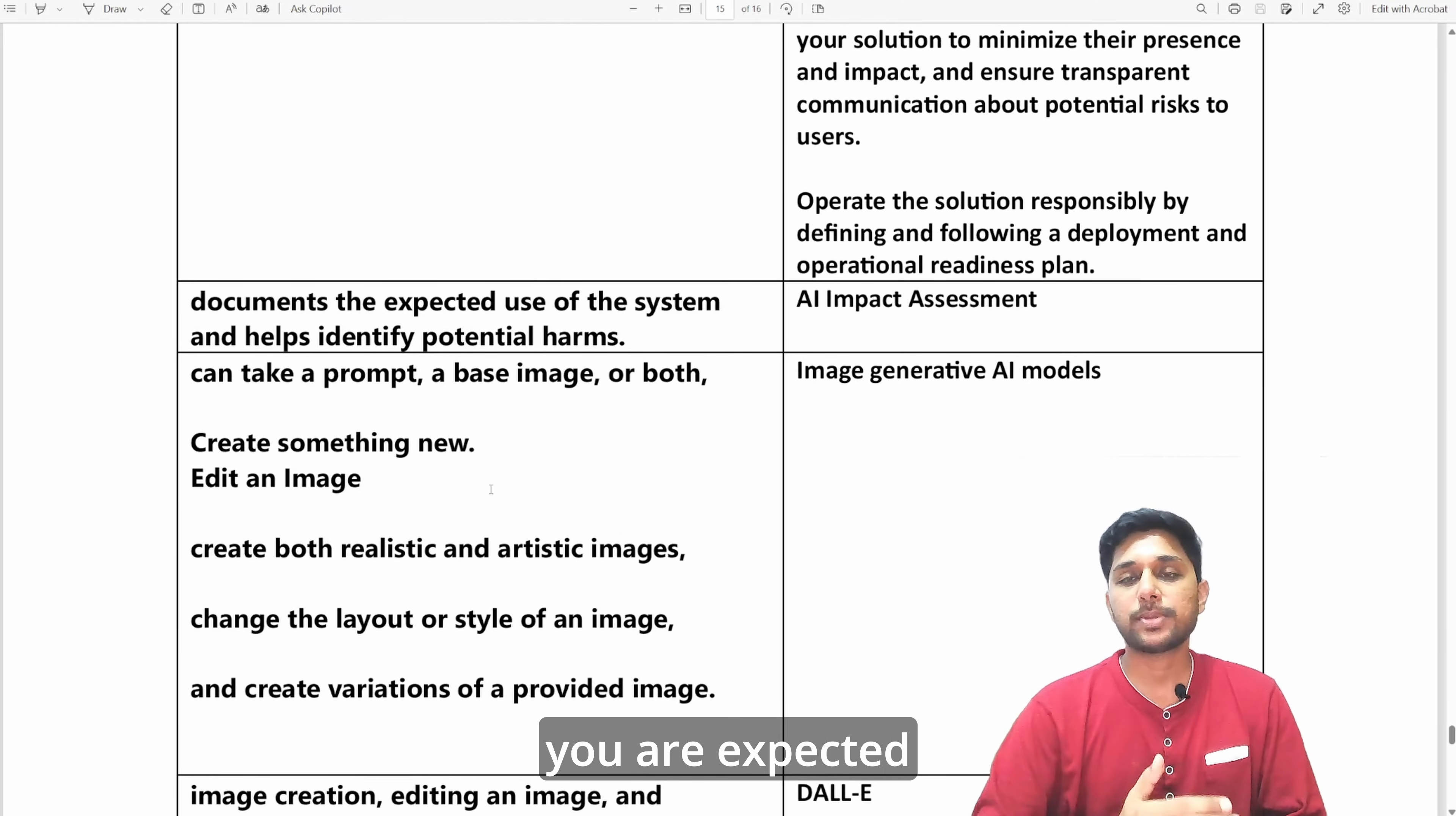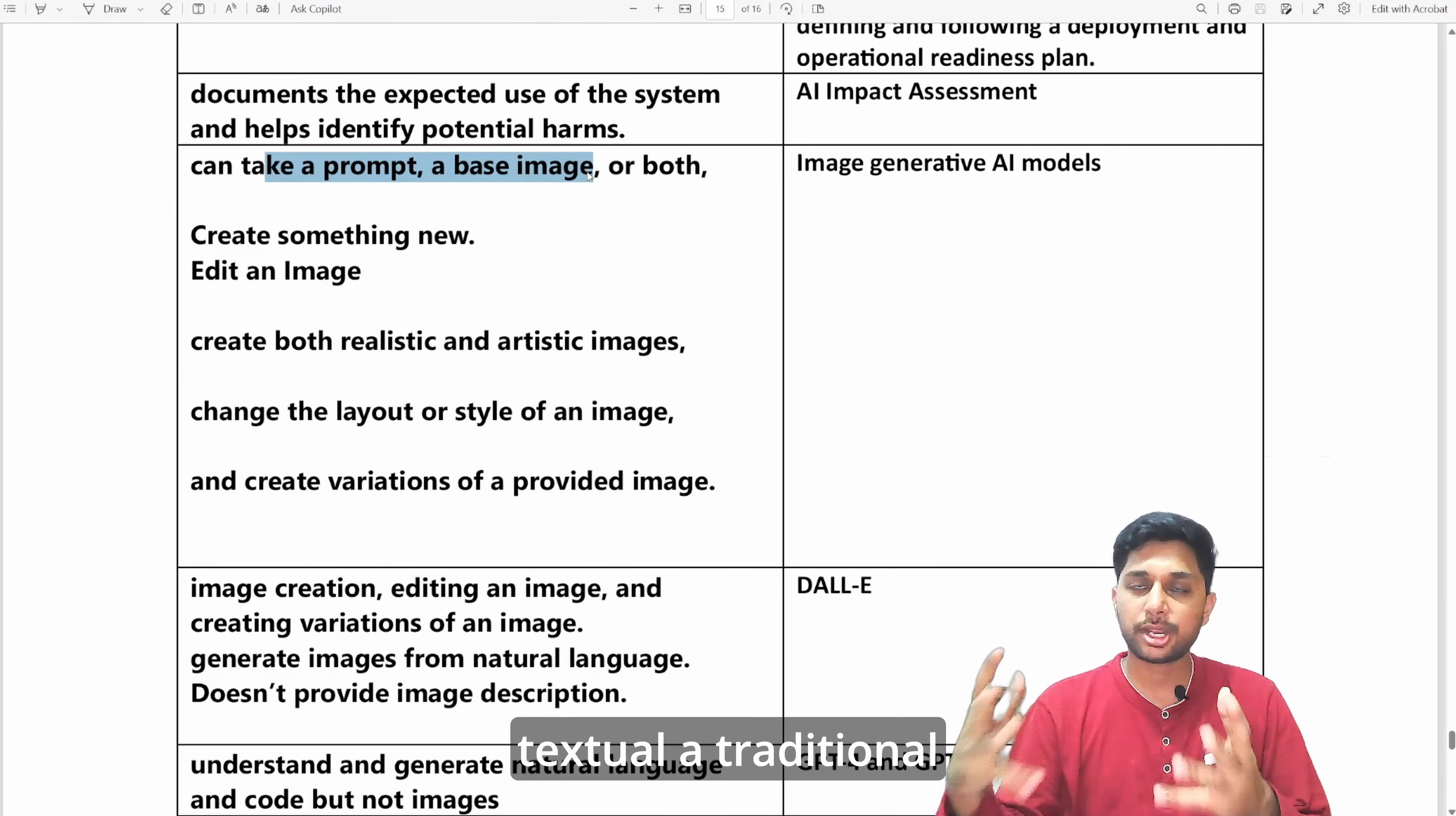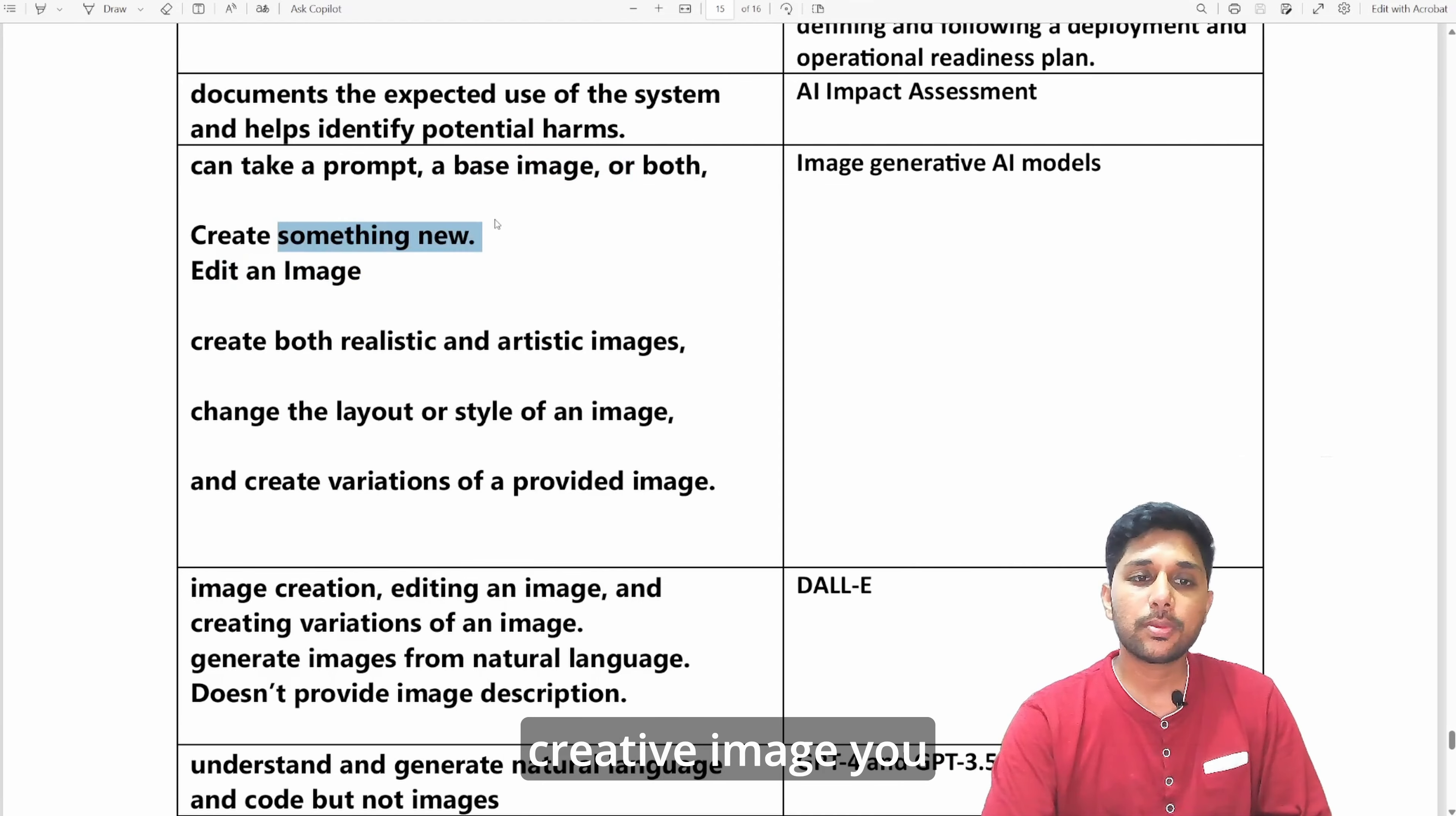There are image generative AI models as well which can fully generate images. It can take a prompt as an image as well, apart from taking the textual traditional input. It can take an image as an input. You want to modify, you want to edit some image, or you want to create new images.